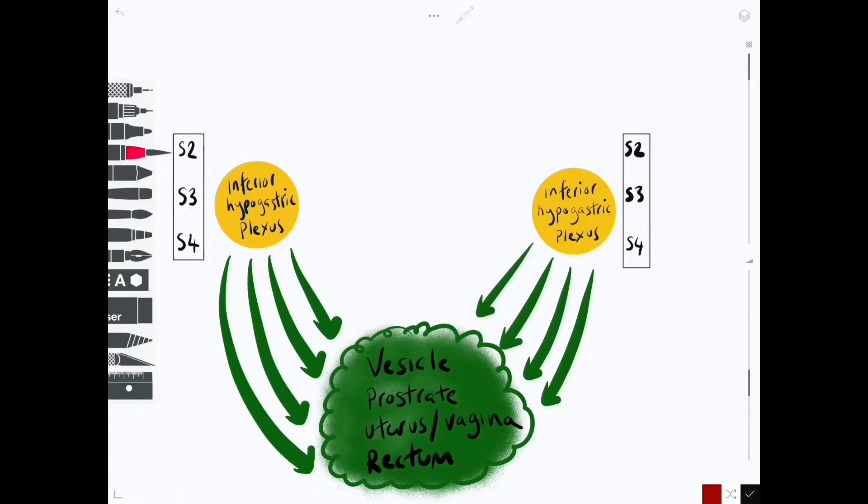So the inferior hypogastric plexus contains a mixture of parasympathetic and sympathetic nerves. Now S2 to S4 is where we would find the parasympathetic contribution coming out as pelvic splanchnic nerves. We can see those now via the red arrows joining into the inferior hypogastric plexus.